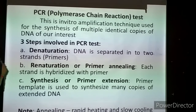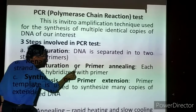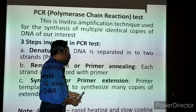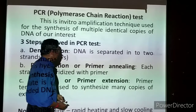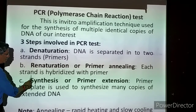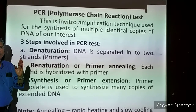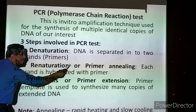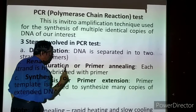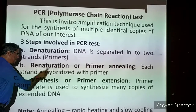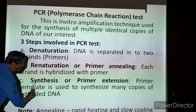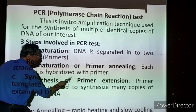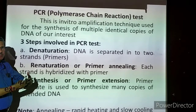The second step is re-naturation, also called primer annealing - A-N-N-E-A-L-I-N-G. Each primer strand is hybridized with a new combination of DNA - each strand hybridizes with another new primer. The third step is synthesis, also called primer extension. The primer is elongating. The original copy of the primer - the template - is used to synthesize many copies. From the one original strand that was separated, an enormous number of copies of extended DNA will be produced. That is called synthesis or primer extension.